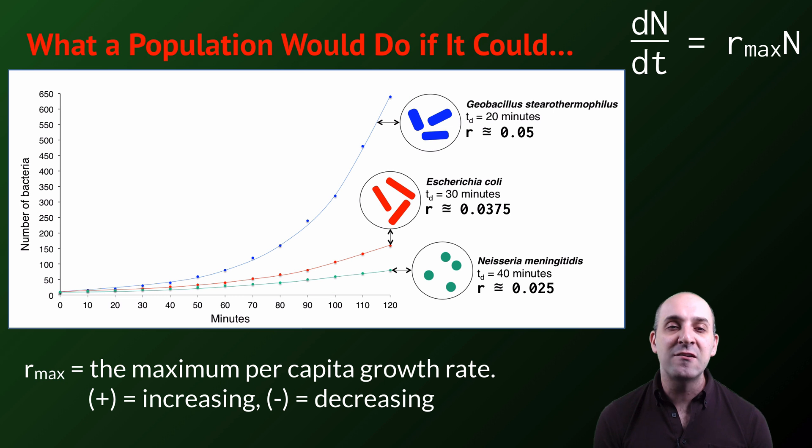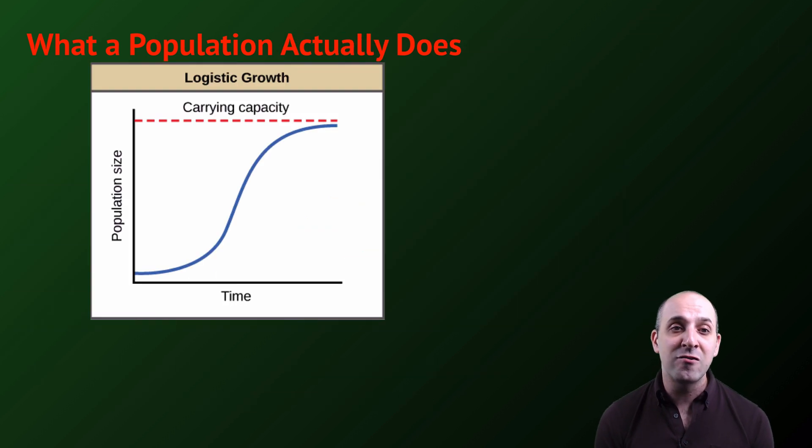And that's because the exponential growth model is not taking into account limitations on population growth, which very much exist. And so, that is our other model of population growth, the logistic growth model, which takes into account the limitations on population growth in a particular environment, what we call the carrying capacity, or the number of individuals of the population that can be sustained in a particular environment due to resource limitations.